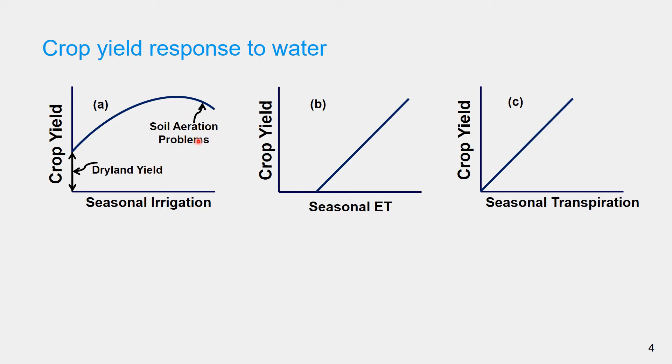In the middle is the graph of crop yield versus seasonal evapotranspiration. It crosses the x-axis at a positive value and this x-intercept corresponds to soil water evaporation. On the right is the graph of crop yield versus seasonal transpiration which is linear and passes through the origin.